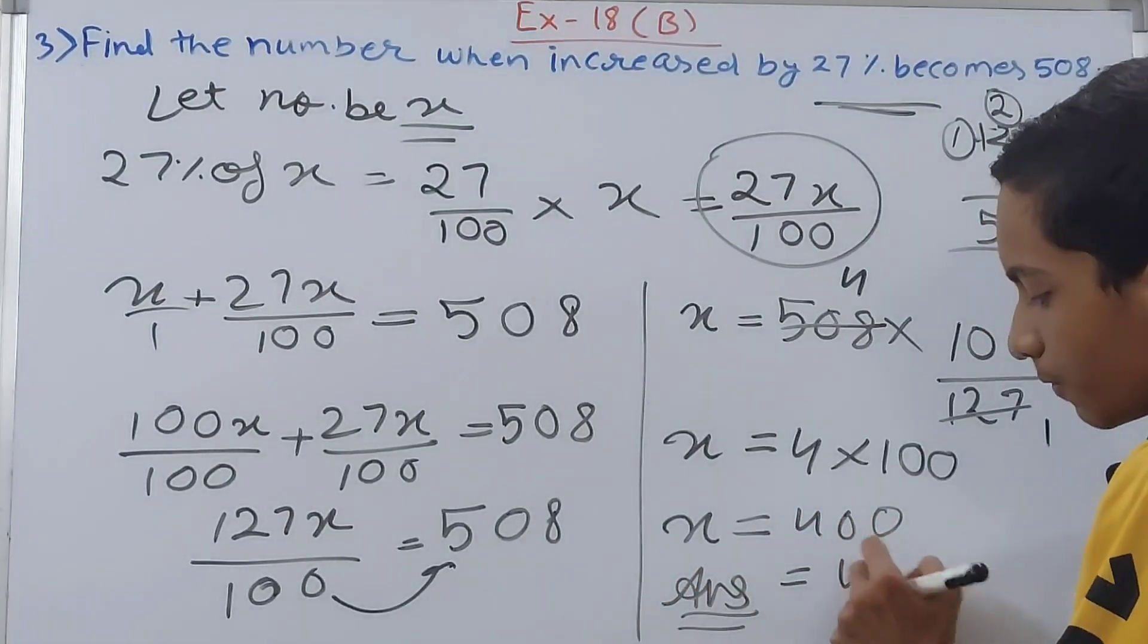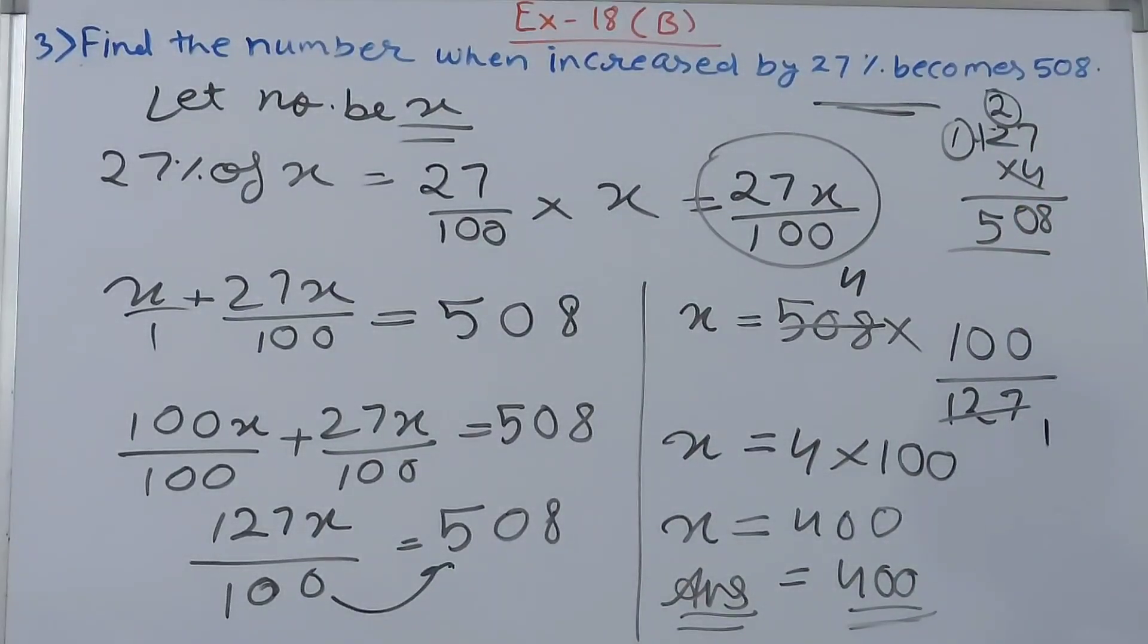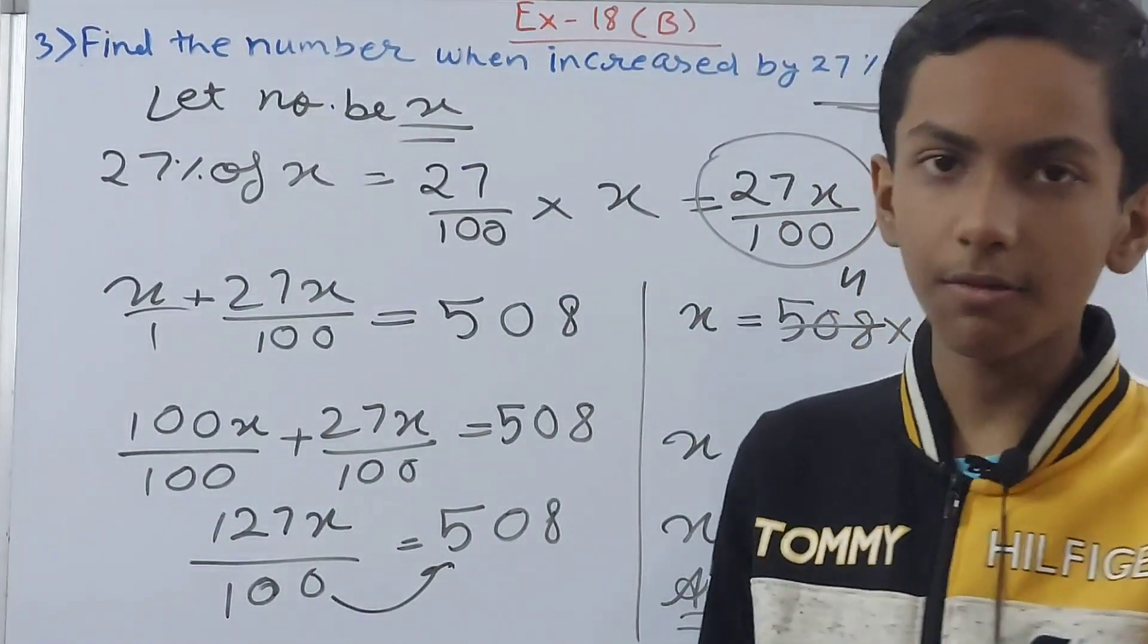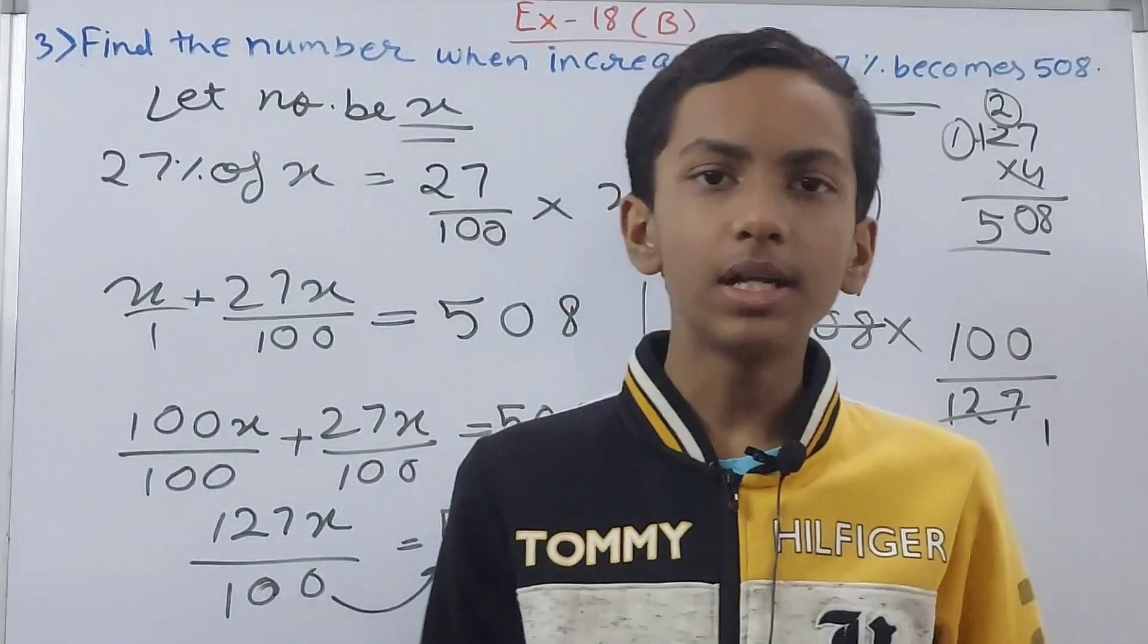So this becomes x equals to 4 into 100, so x equals 400. So this means that our number that was x becomes what? 400. So 400 is the number which increased by 27% becomes 508.